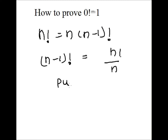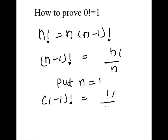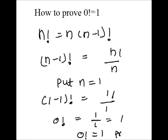Put n is equal to 1 on both sides. So, 1 minus 1 factorial is equal to 1 factorial upon 1. This gives us 0 factorial is equal to 1 factorial upon 1. We know 1 factorial is 1, so 1 upon 1 is 1. Therefore, 0 factorial is equal to 1. Proof complete.